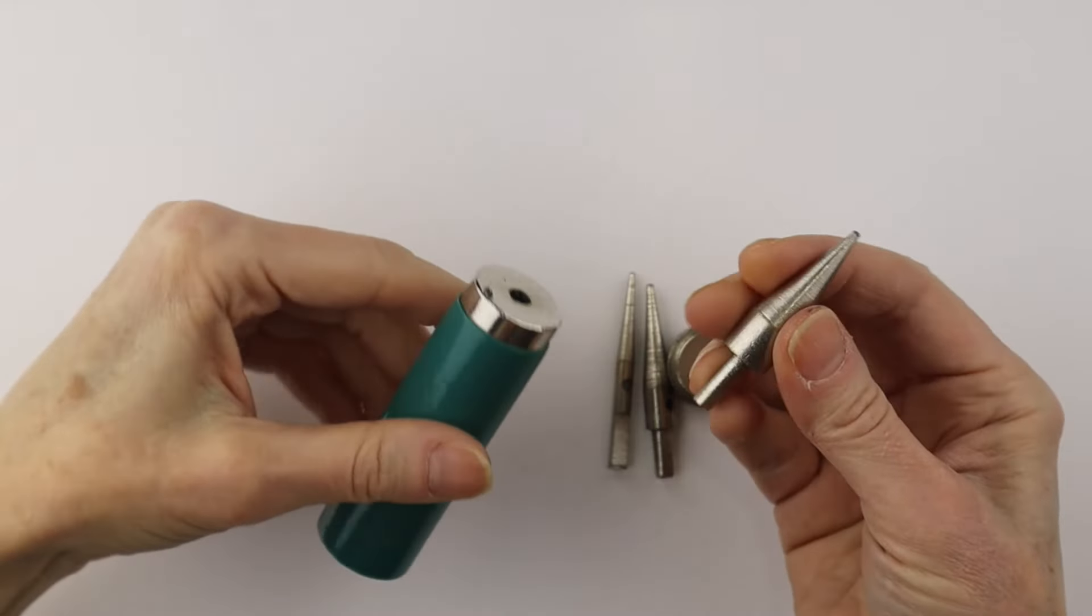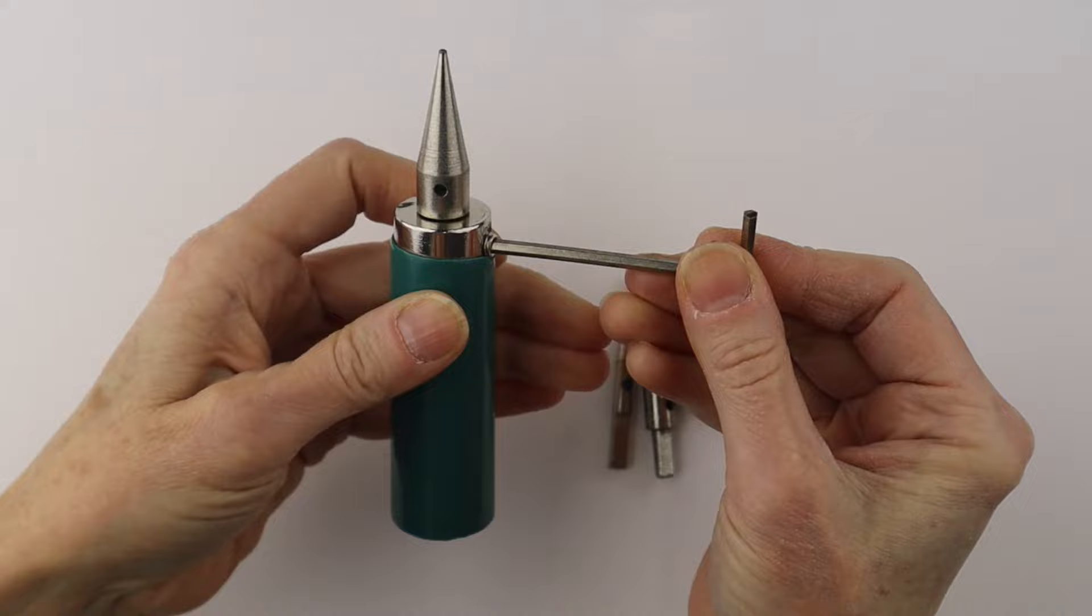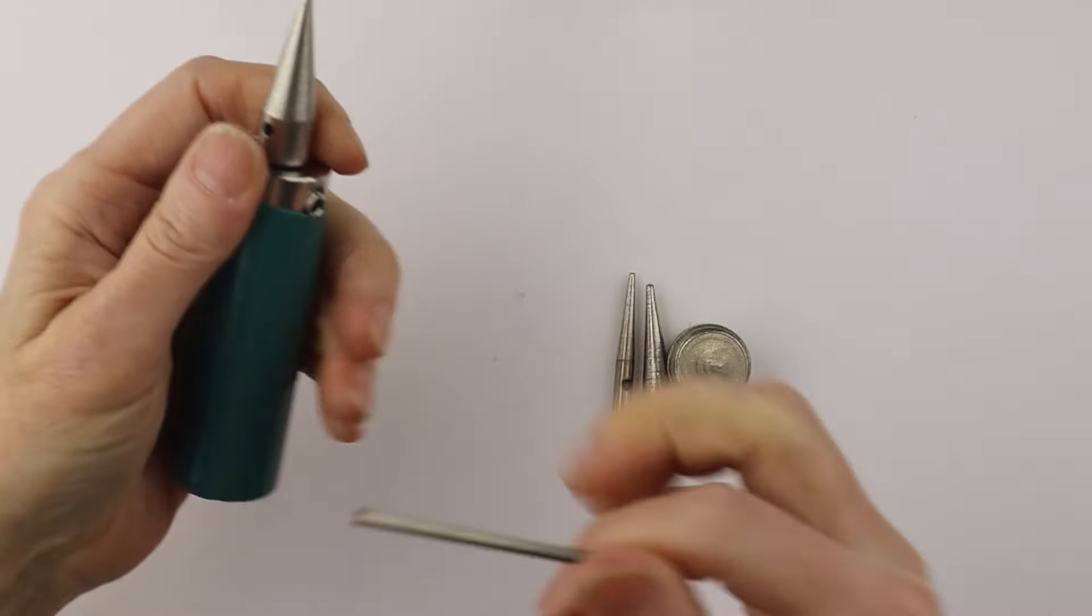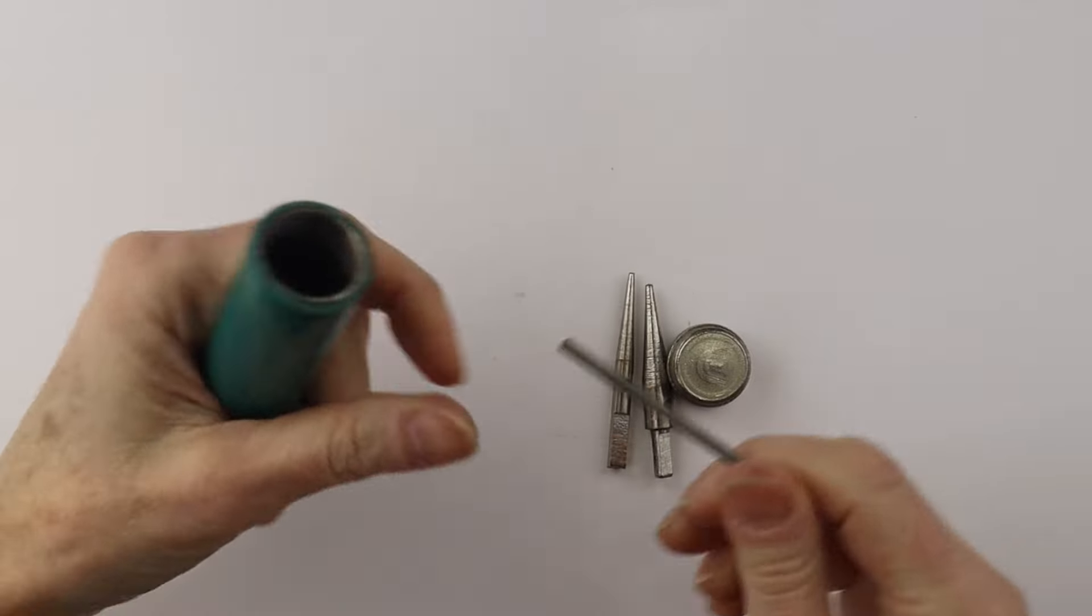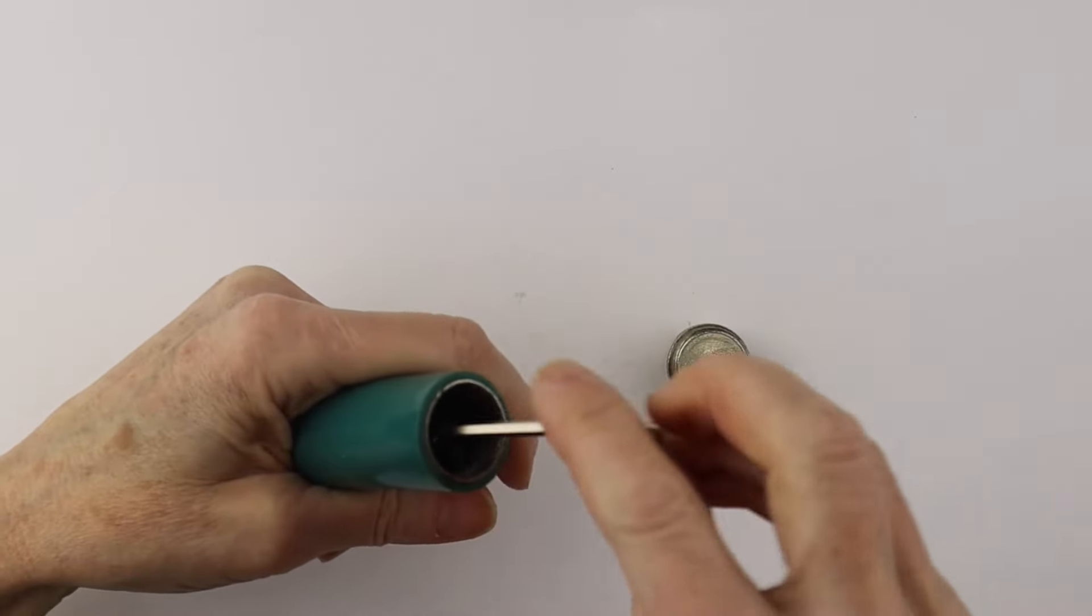I'm going to start with the tool. I'm using the basic mandrel that comes with the kit. This is the largest size. You're going to screw it in with the Allen key, and then all the other bits fit in the end of the tool.